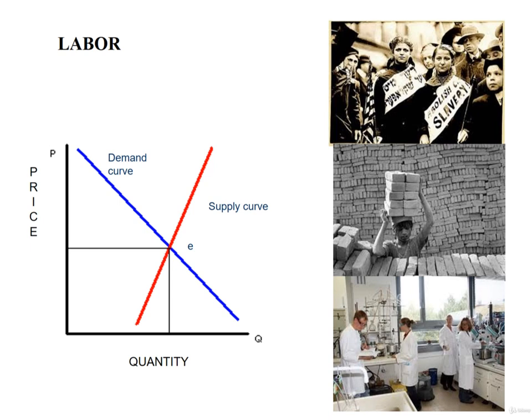Neoclassical theory accurately describes labor market dynamics because labor in the aggregate, as a factor of production, is quite sensitive to changes in the price offered in return for labor. Moreover, most people must continue to offer their services in exchange for compensation, even as the wages they are offered are being forced down by market conditions or by the introduction of laws that prevent labor from engaging in collective bargaining.